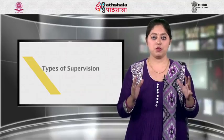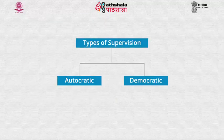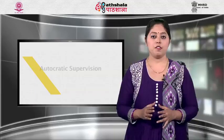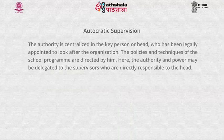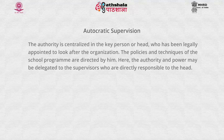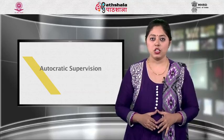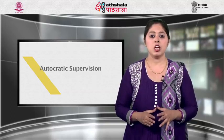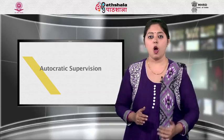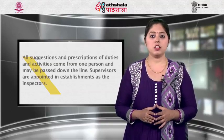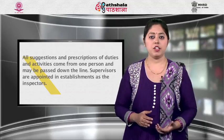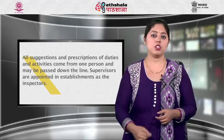There are two types of supervision: autocratic and democratic. In autocratic supervision, authority is centralized in the key person or head who has been legally appointed to look after the organization. The policies and techniques of the school program are directed by him. Authority and power may be delegated to supervisors who are directly responsible to the head. There is quick communication between the authority and the supervisors so that they can be easily contacted and ordered to carry out definite directions. All suggestions and prescriptions of duties come from one person and may be passed down the line.